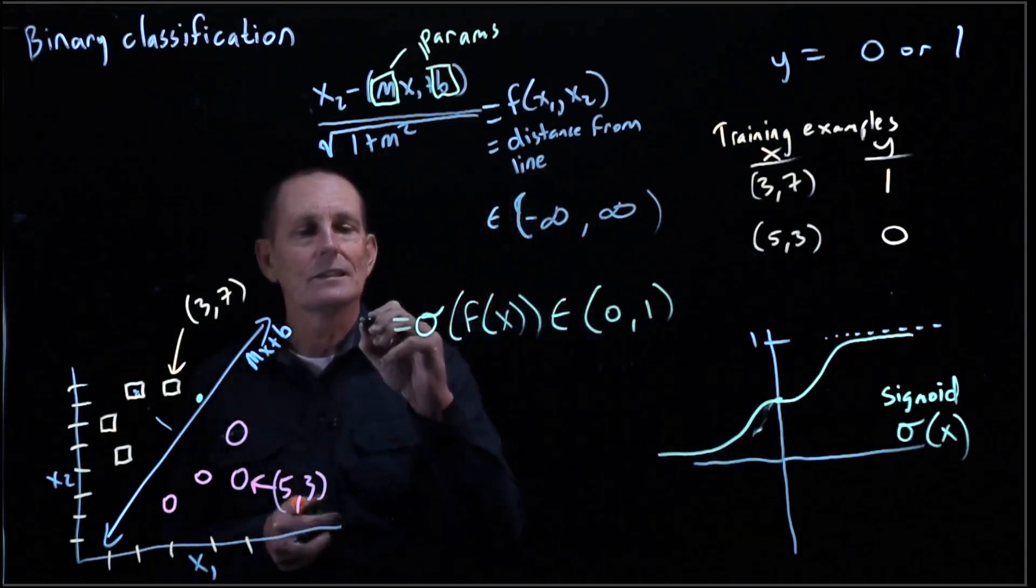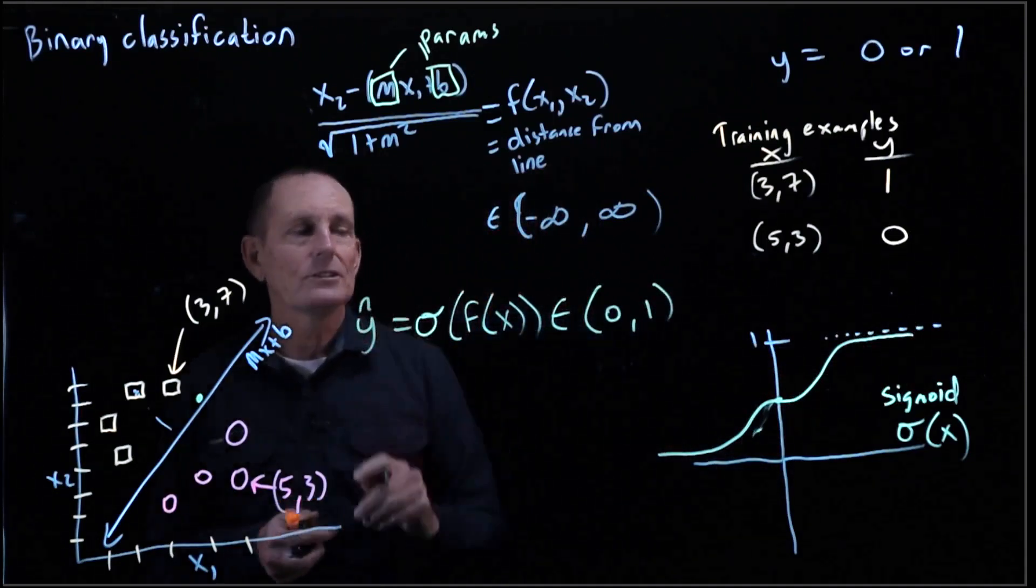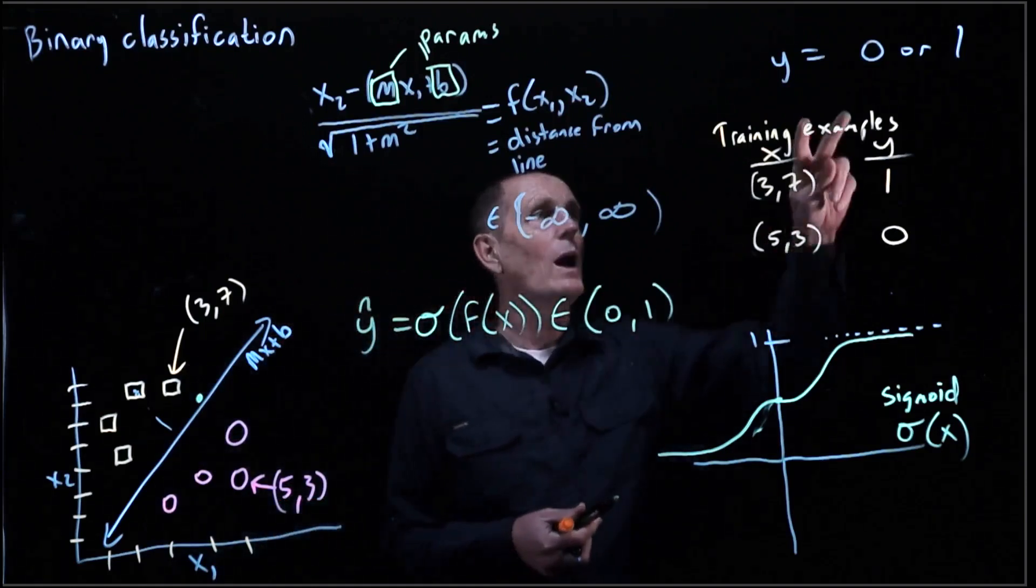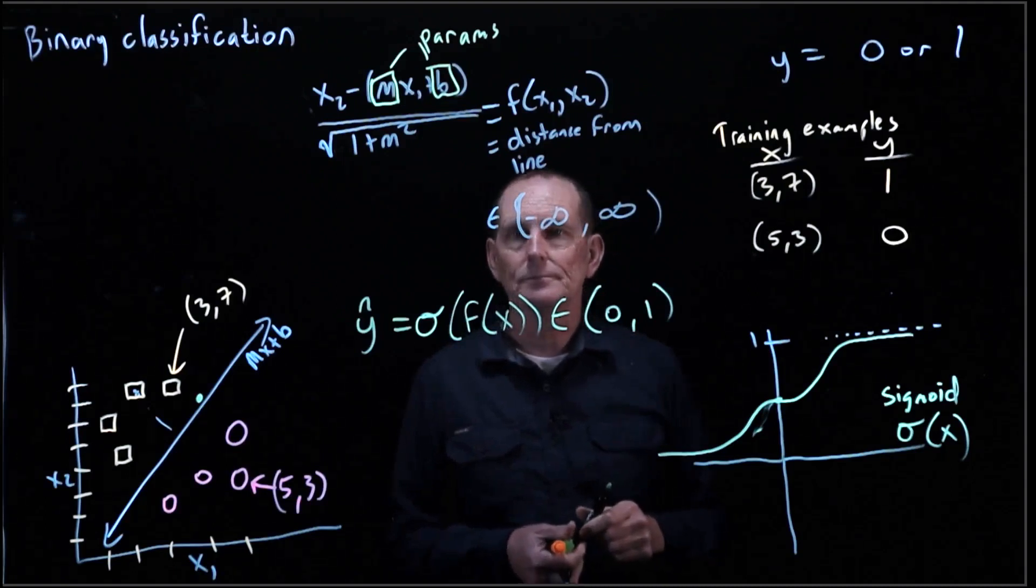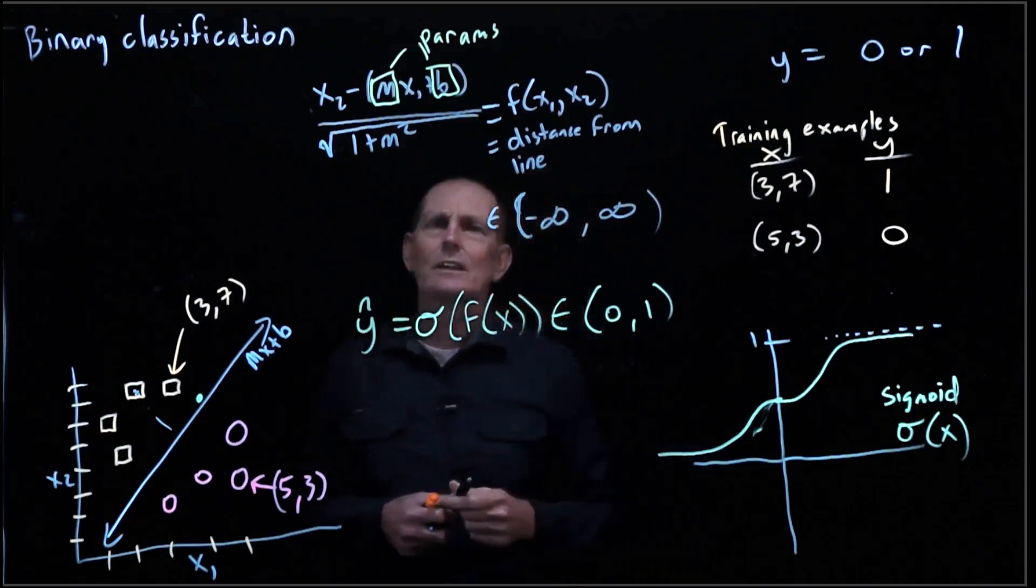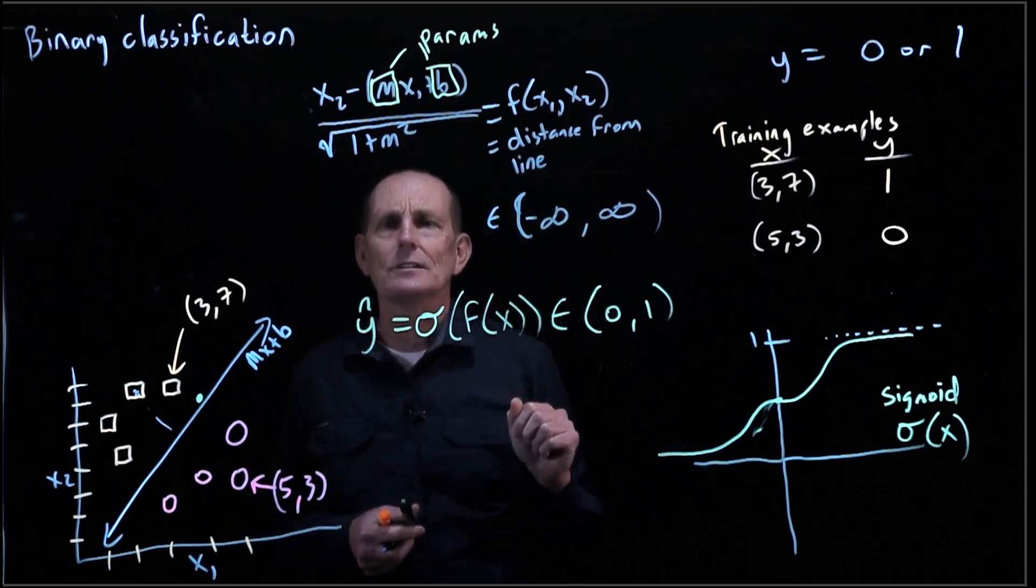So we're going to make this be y hat. So y hat is going to be in the range 0 or 1. y is going to be either 0 or 1.